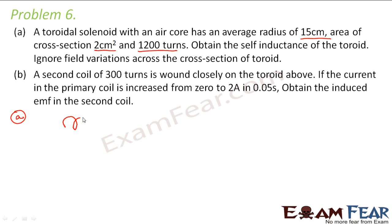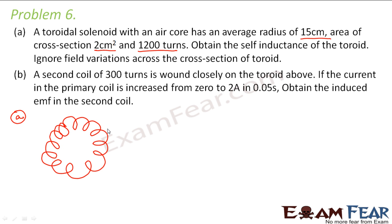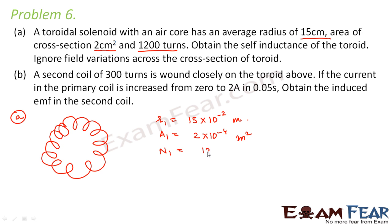Let us draw a toroid first. The average radius of the toroid is given as 15 centimeters, which is 15 × 10⁻² meters. The area of cross-section is 2 × 10⁻⁴ meter squared, and the number of turns is equal to 1200.